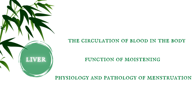Blood in the liver supplies the uterus with blood, and is closely related to the penetrating vessel. Therefore, liver blood is extremely important for a regular and healthy menstrual function.